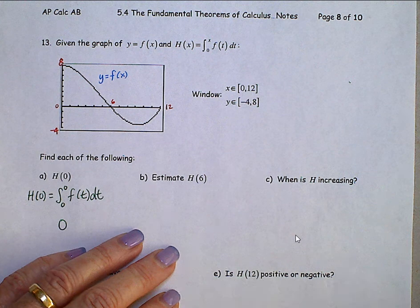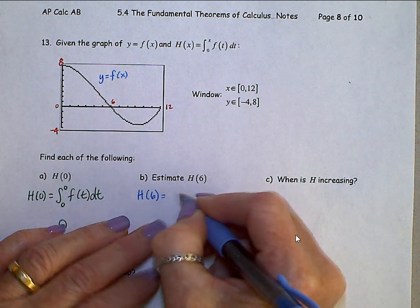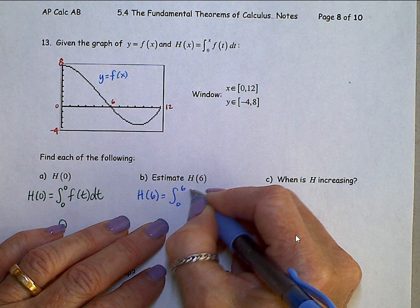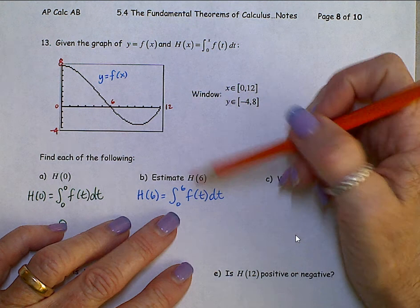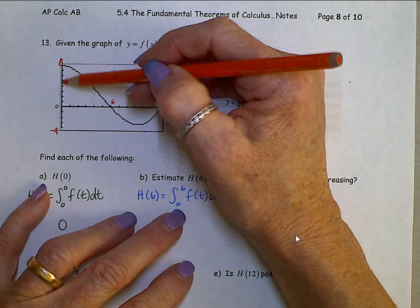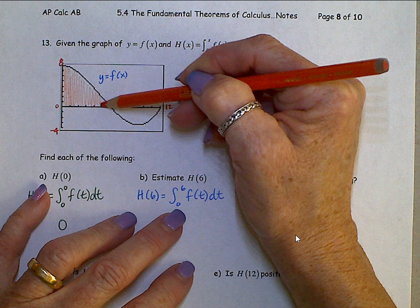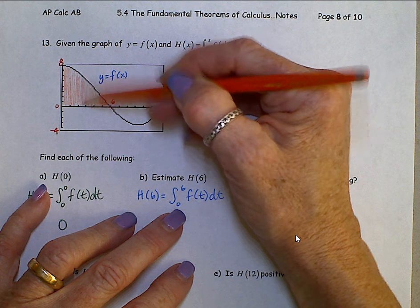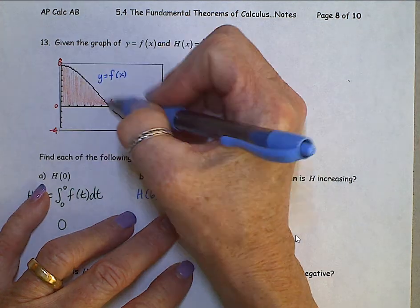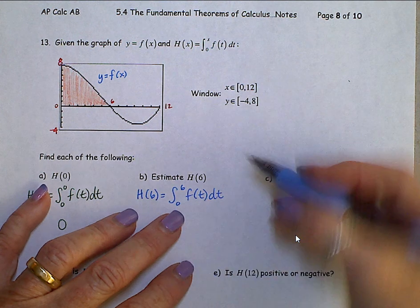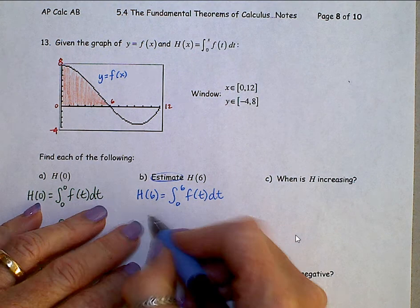Looking at this next one, we want to estimate h of 6. h of 6 is the integral from 0 to 6 of f of t dt, which visually is the area underneath this f function from 0 to 6. Which is that. And we don't know the equation of f of x, so I can't do an anti-derivative on this one.